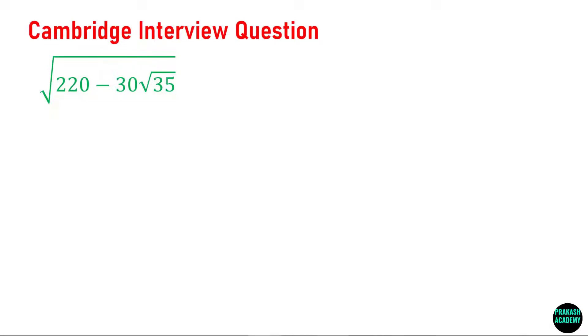In this problem you have to find the value of this expression. The expression is you have a square root and inside this square root you have 220 minus 30 times square root of 35.